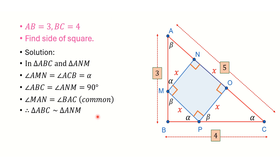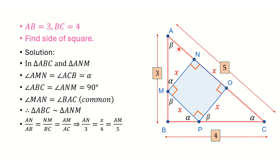Since the triangles are similar, we can write the proportion: AN/AB = NM/BC = AM/AC. Here AB = 3, BC = 4, and NM = x. For AC, using the Pythagorean theorem: AC² = AB² + BC² = 9 + 16 = 25, so AC = 5. Substituting: AN/3 = x/4 = AM/5.